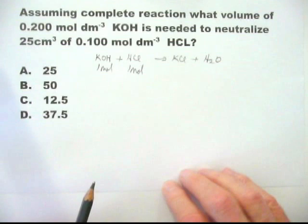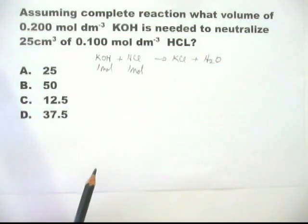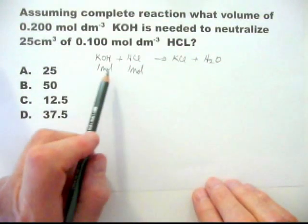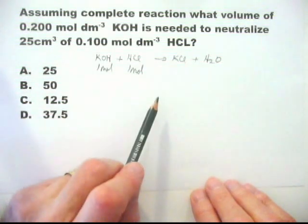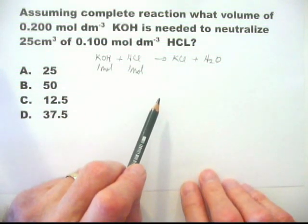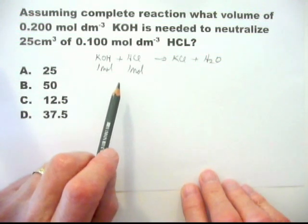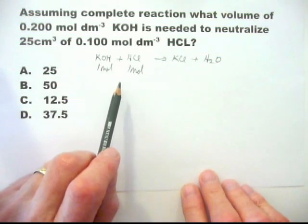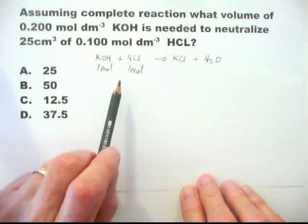In Paper 2, it's usually a good idea to write the equation down and to say one mole and one mole there. Usually that gives you a mark just for doing that, but in Paper 1, of course, it's a different situation. You're expected not necessarily to write anything down, but eventually simply to choose the correct answer.